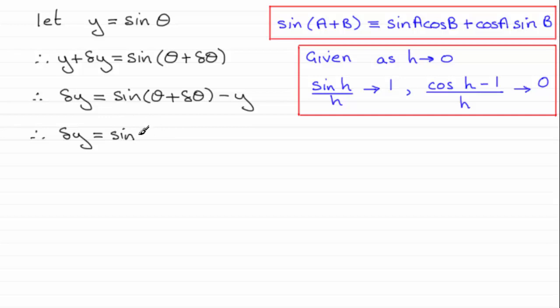So as I say you should be familiar with that identity and that will give us the sine then of theta cosine of delta theta plus the cosine then of theta sine delta theta. And then we've got the minus y here. But I'm going to replace that y then with sine theta so we have minus sine of theta.